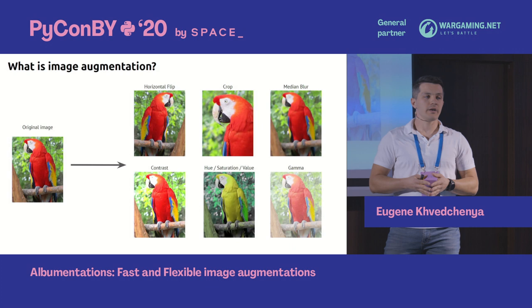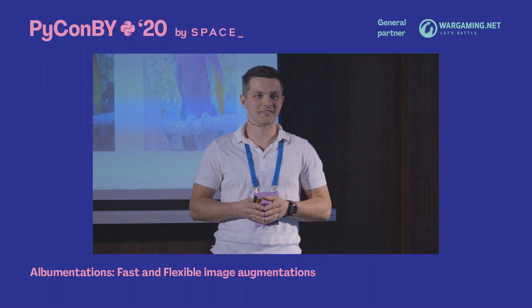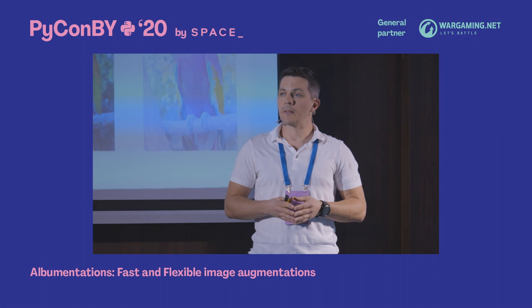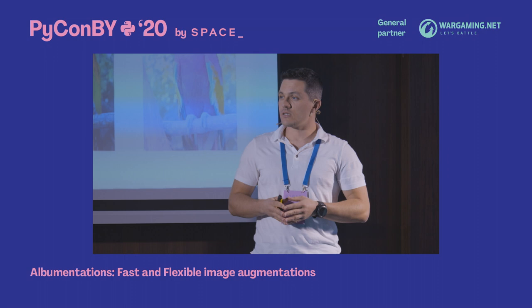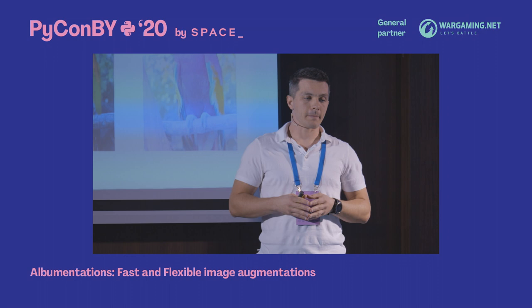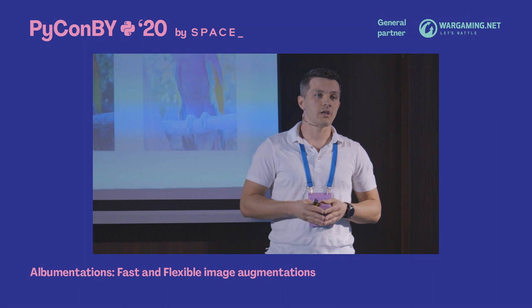How many of you work with image data in machine learning? And how many of you have enough data for your models? Clearly, lack of data is one of the main problems we face, since it can be expensive to get more data and expensive to annotate it. With Albumentations, we try to solve this problem by offering an opportunity to augment your data so it becomes more diverse, while keeping the semantic of your images intact.